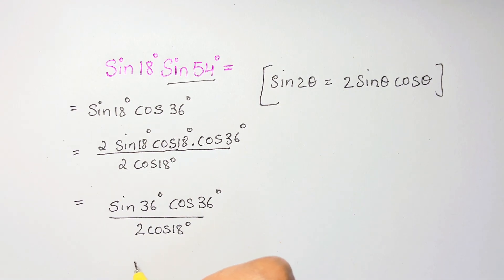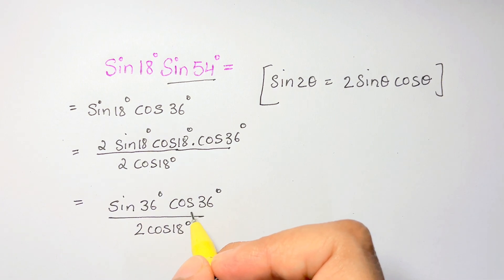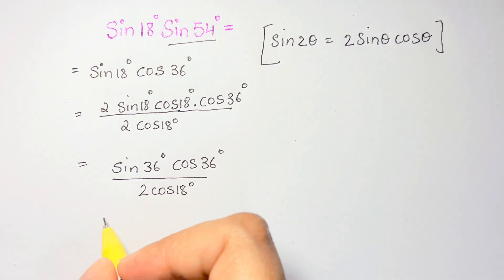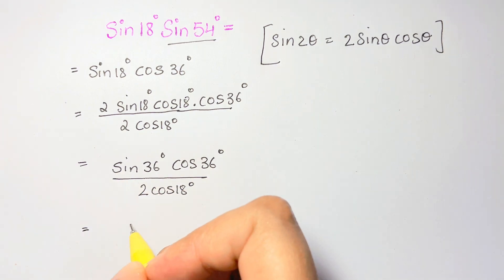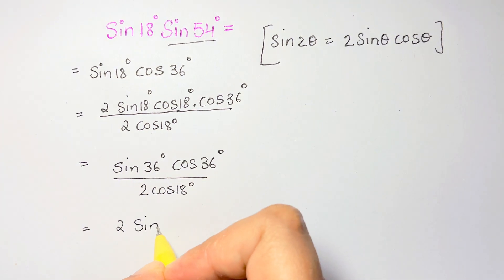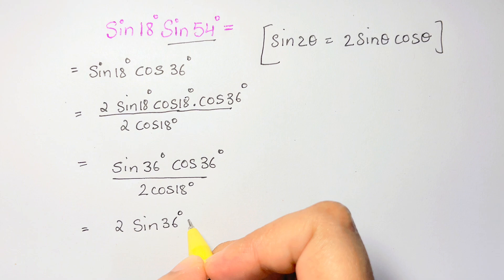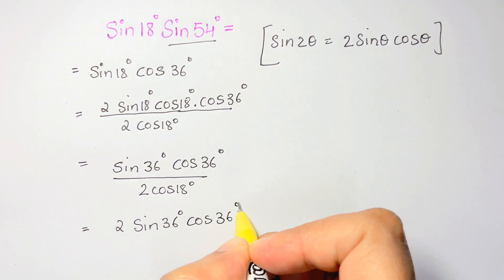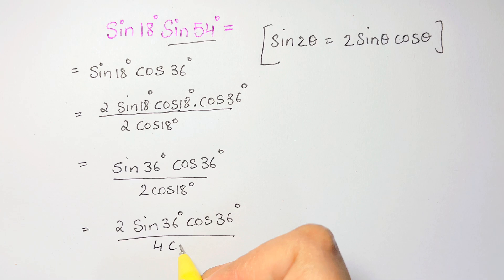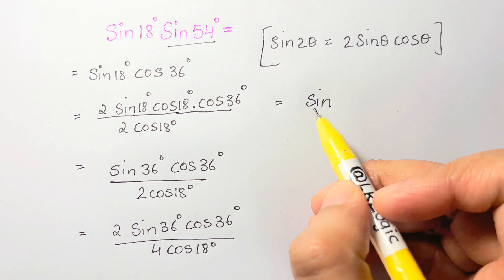Now again we have 36. Again you can apply the double angle formula. But before that you need to have the 2. So multiply and divide top and bottom by 2. So you have 2 sine 36 degrees cos 36 degrees over 4 cos 18 degrees.